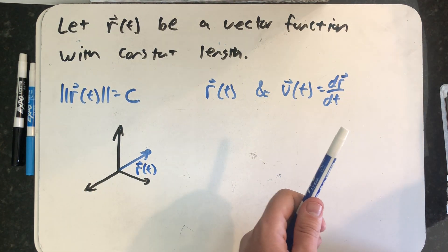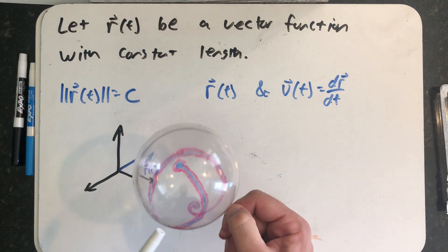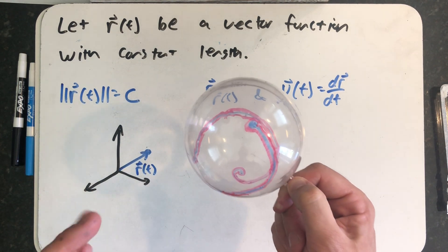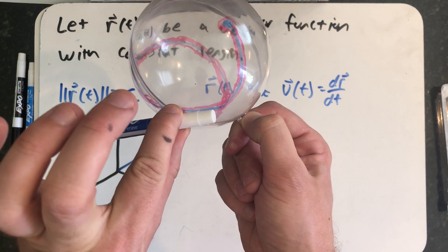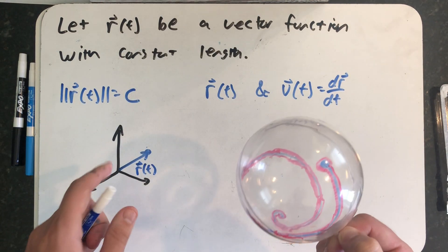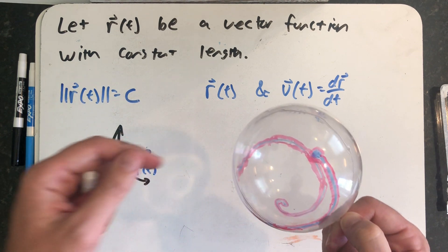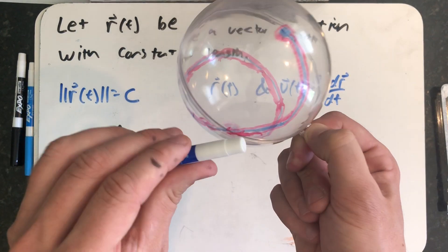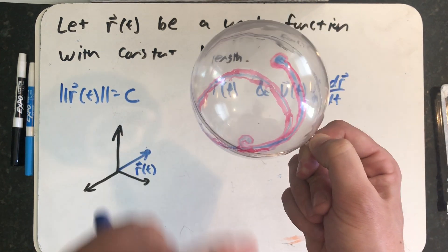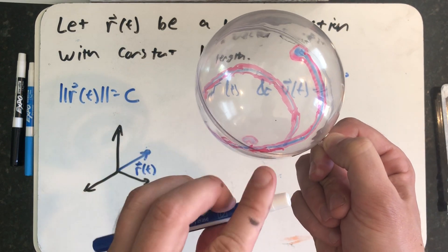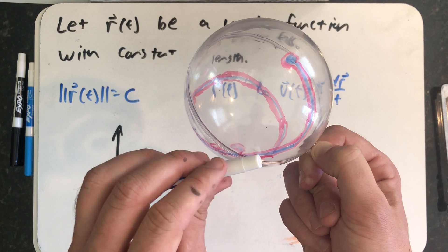Well R of t points to a point on a sphere. V of t is the first derivative. It's the velocity and the velocity is always tangent to the direction of motion. And so think about that. R of t points from the origin which is at the center of my sphere to a point on this graph. So R of t literally pointing across the radius of the sphere to a point on the graph where my velocity vector is.